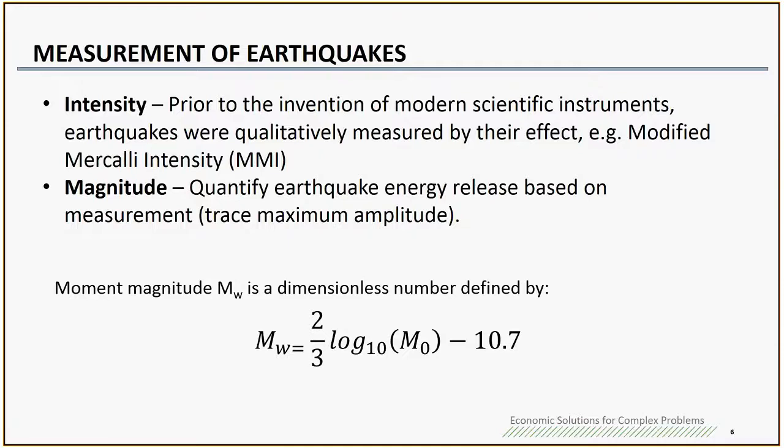Based on this equation, what I want to highlight is that an earthquake of magnitude 7 releases about 32 times as much energy as one of magnitude 6. With one magnitude increase, the energy is 32 times increase. Keep that in mind.